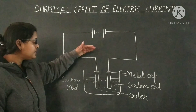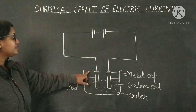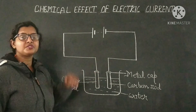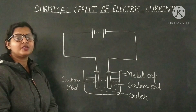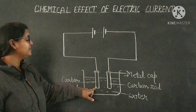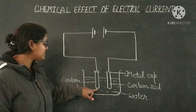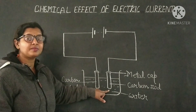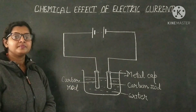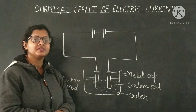Now insert these carbon rods into the solution, being careful that the metal caps stay above the solution. Electric current will pass from the positive terminal, move to one carbon rod, travel through the conducting solution to the other carbon rod, and then return to the negative terminal of the battery. That is where the chemical effect of current takes place.